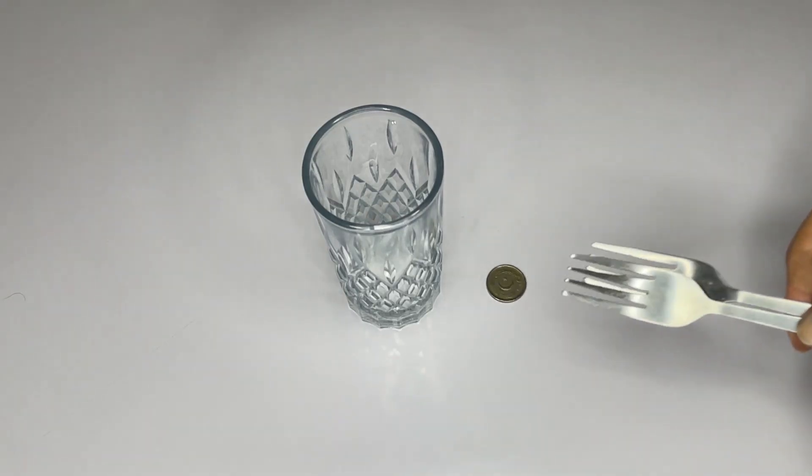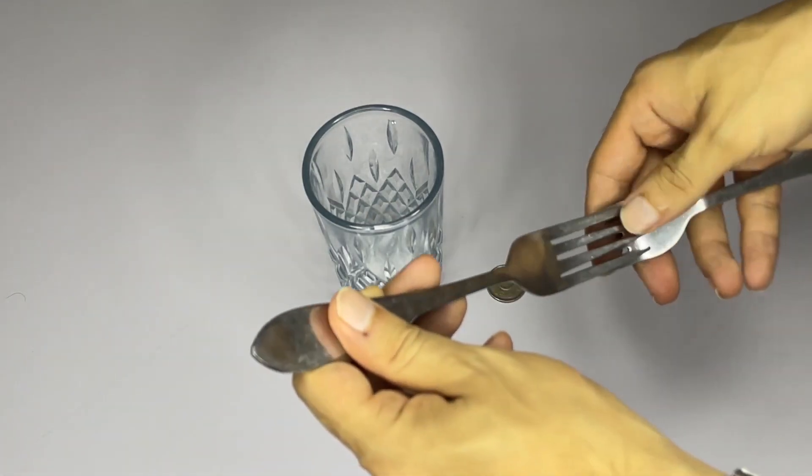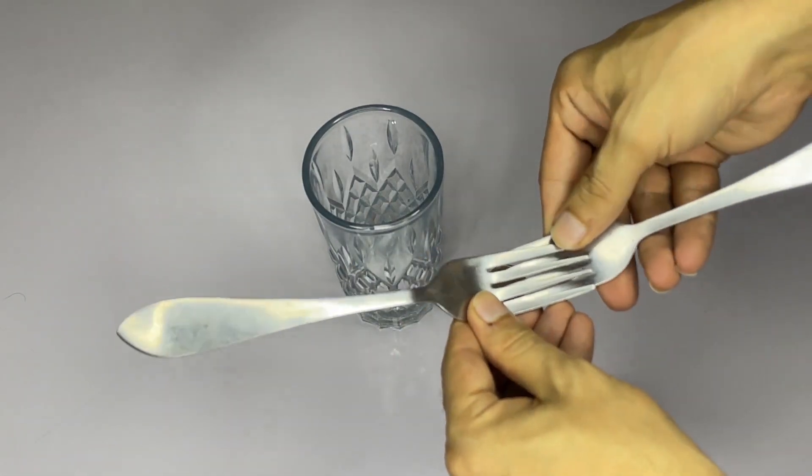Take two forks and place them on one another in such a way that we can place the coin in between the prongs.